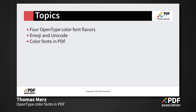I grouped the presentation into the following topics. In the first section I will present the currently existing OpenType color font flavors — there are several competing color font formats, which are all standardized in OpenType. The second section covers the use of emoji, as the Unicode standard did a lot of work in standardizing emoji and other symbols. In the final section we will take a look at how to implement color fonts in PDF.